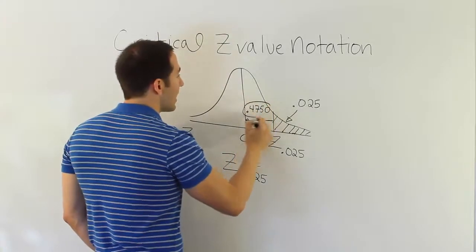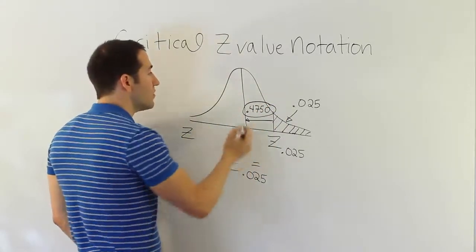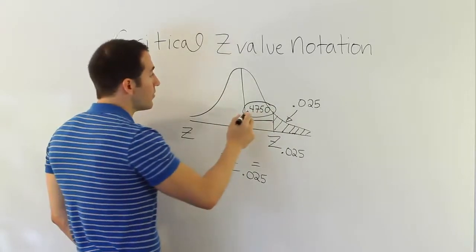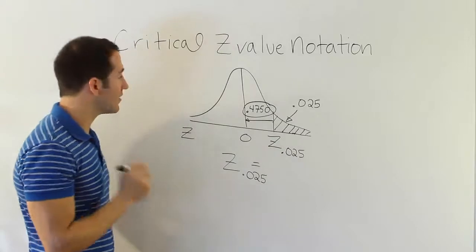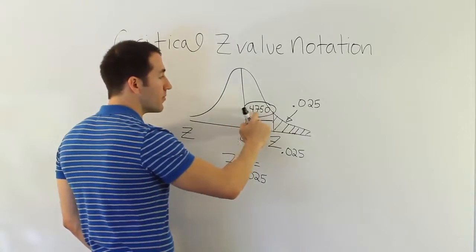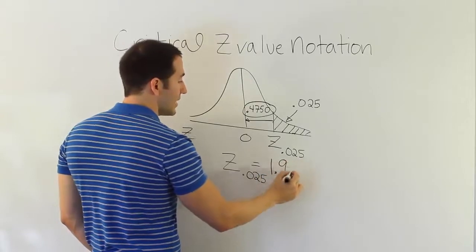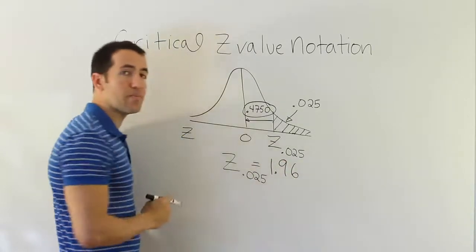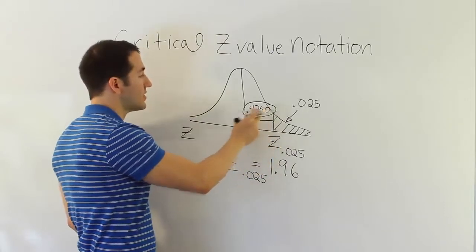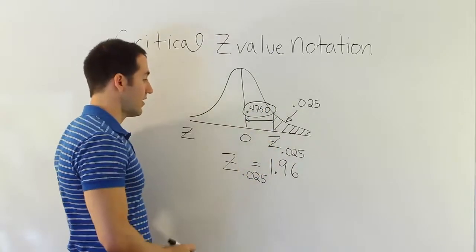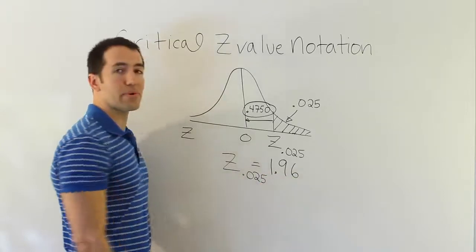Once I know the area from the center to that point is .4750, I can do a simple lookup of .4750 on the z-chart and find the corresponding z-score. If you go to your chart and look up .4750, you will confirm that the answer is 1.960. So 1.96 is the corresponding z-score, and z sub .025 equals 1.96.